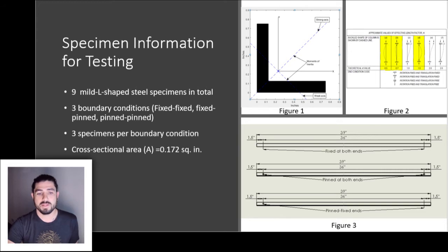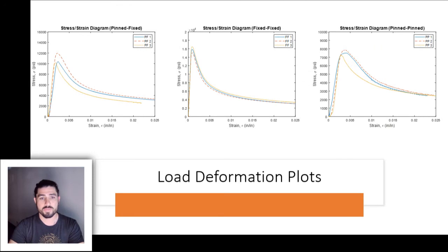Figure three is a visual aid of the specimens from a frontal view. The data acquired from the load frame was plotted into load deformation plots. Each diagram shows the stress versus strain curves of each specimen specific to the type of boundary condition it was tested for.